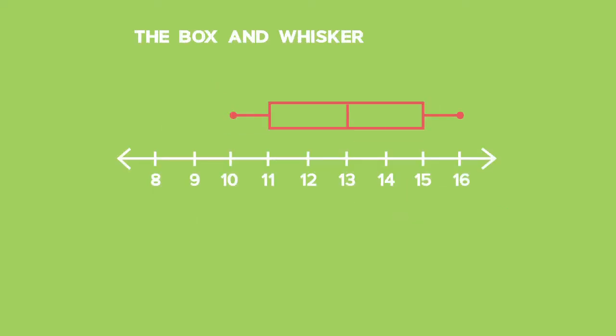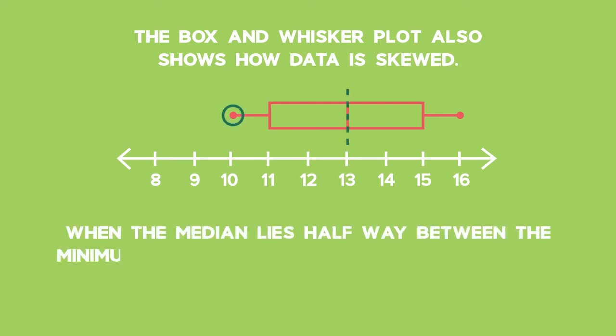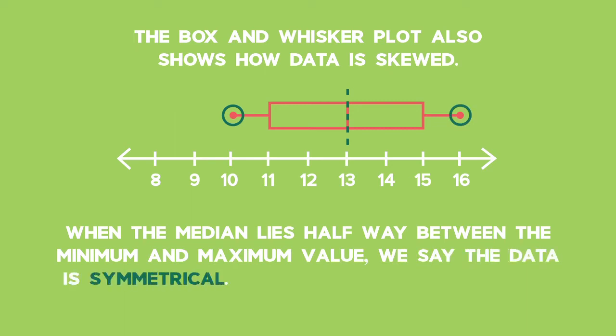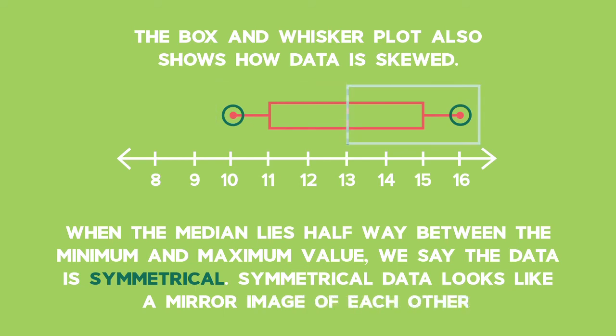The box-and-whisker plot also shows how data is skewed. When the median lies halfway between the minimum and maximum value, we say the data is symmetrical. Symmetrical data looks like a mirror image of each other. When data is symmetrical, the mean and median are very close together.